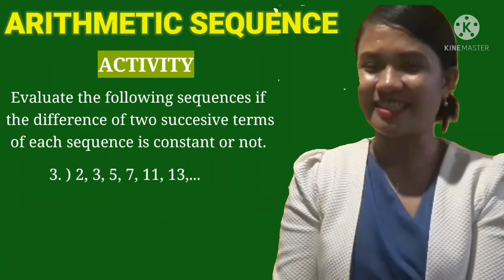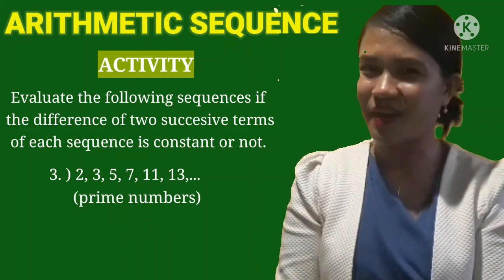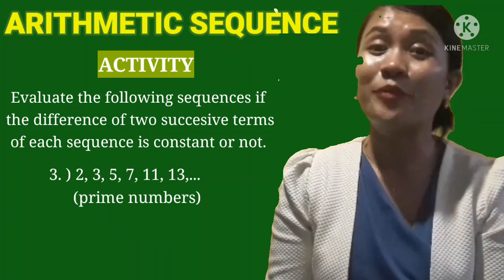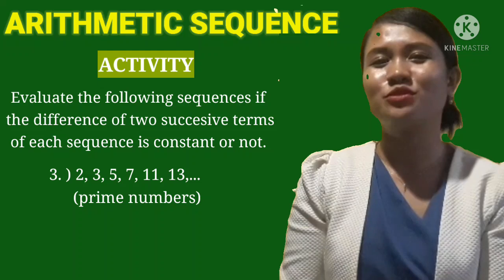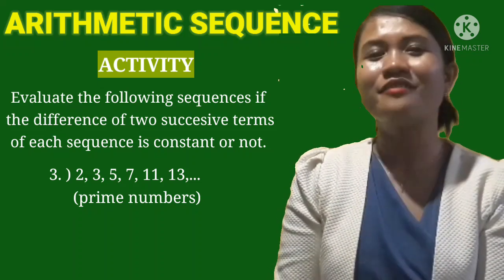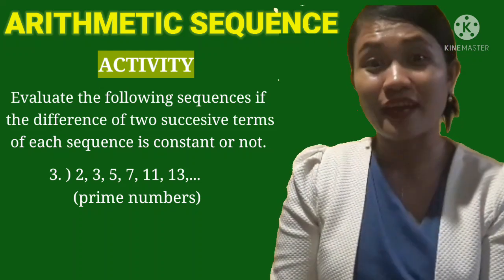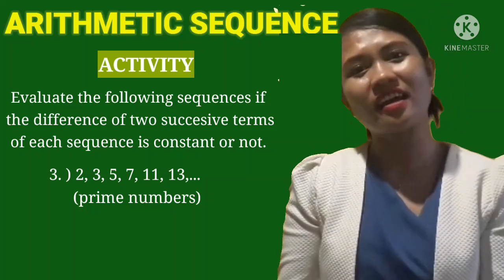Again, it is constant. How about the last given sequence? The given sequence is prime numbers. So we have 2, 3, 5, 7, 11, 13, and so on and so forth. What do you think?